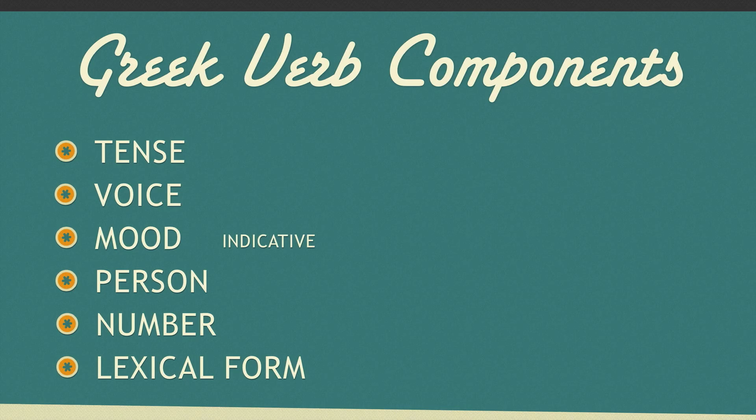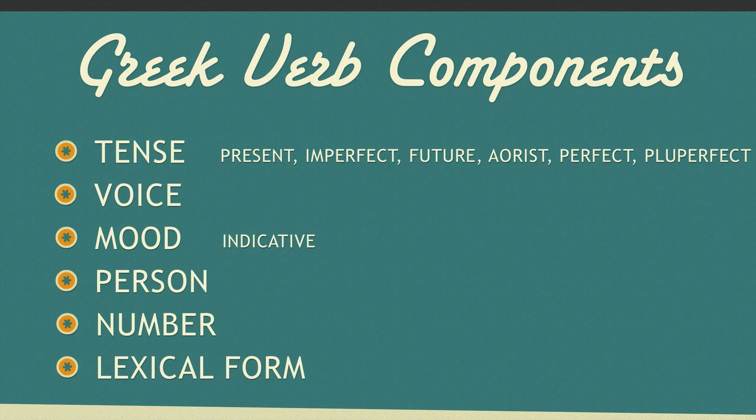Greek has six tenses: present, imperfect, future, aorist, perfect, and pluperfect.